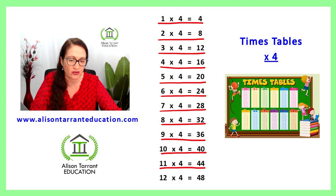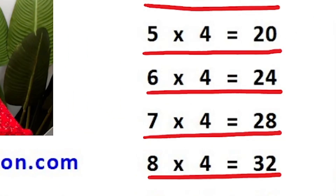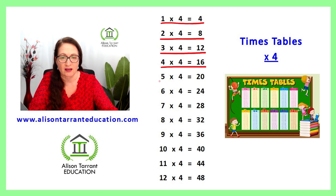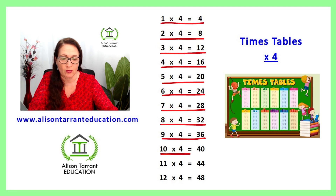Well done. Let's practice that again. 1 times 4 is 4, 2 times 4 is 8, 3 times 4 is 12, 4 times 4 is 16, 5 times 4 is 20, 6 times 4 is 24, 7 times 4 is 28, 8 times 4 is 32, 9 times 4 is 36, 10 times 4 is 40, 11 times 4 is 44, 12 times 4 is 48.